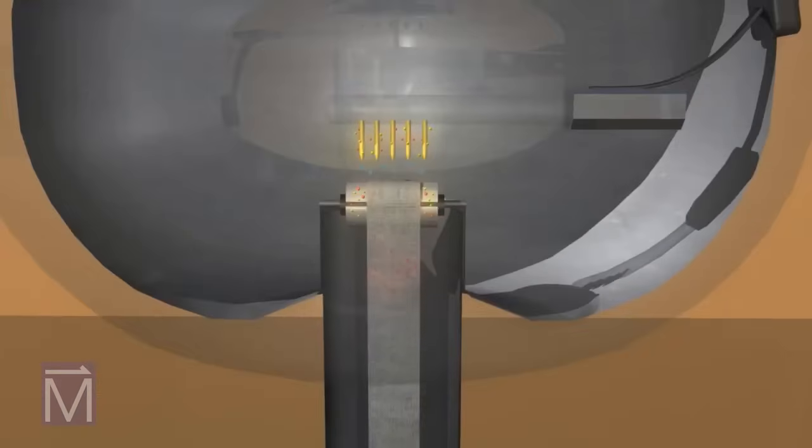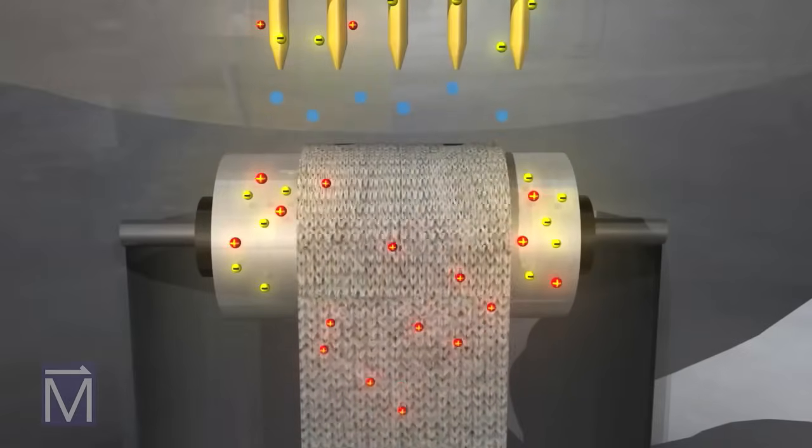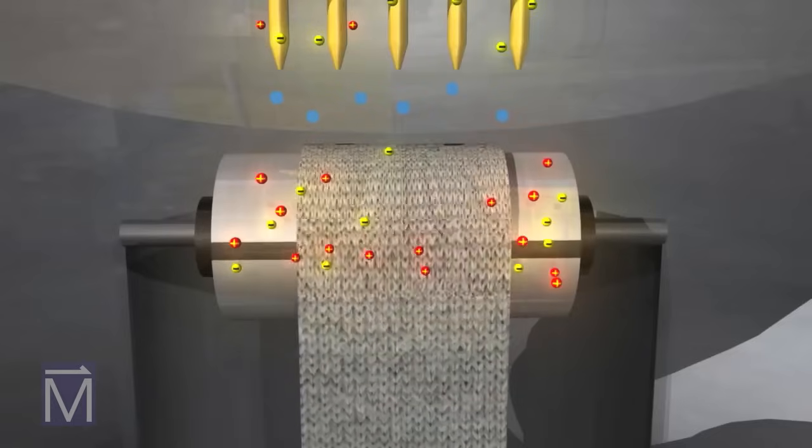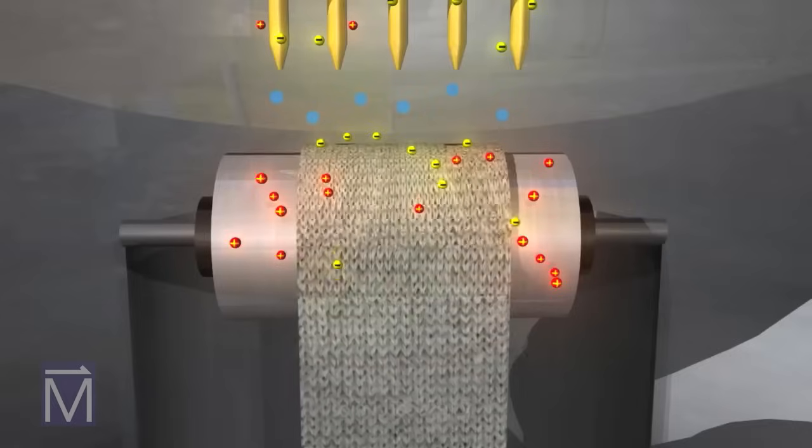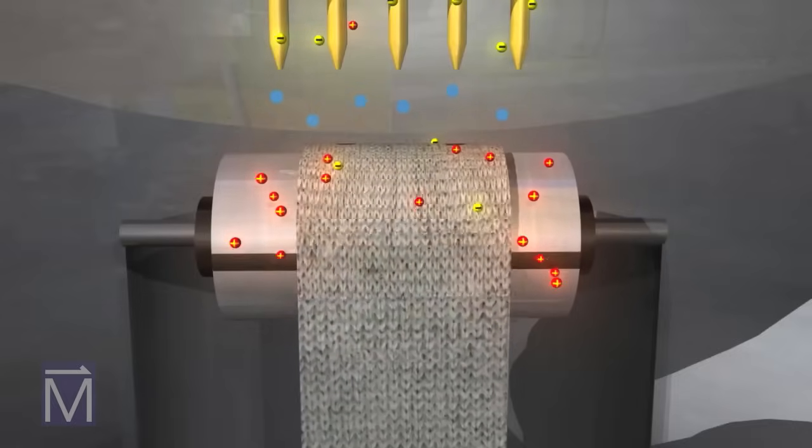The top roller is made of aluminum, which tends to lose electrons. As the positively charged belt rubs against it, electrons move from the aluminum to the belt, giving the roller a positive charge. This positively charged roller attracts electrons to the tips of the top comb.